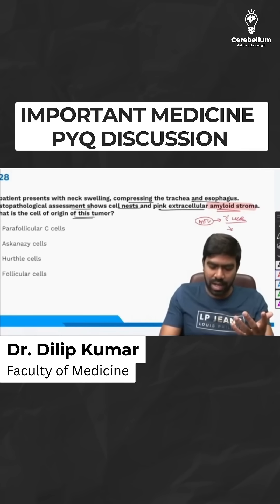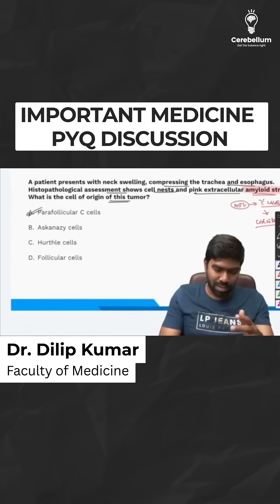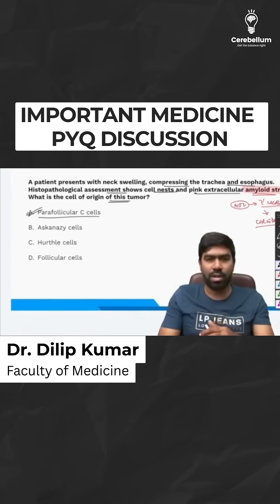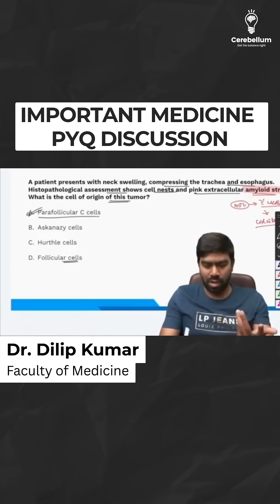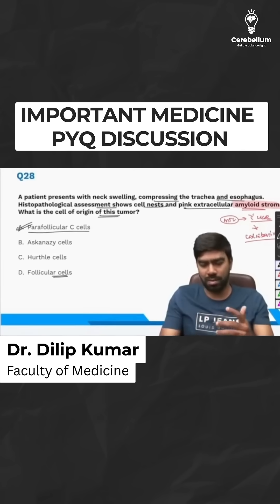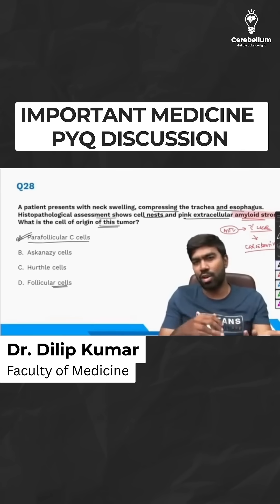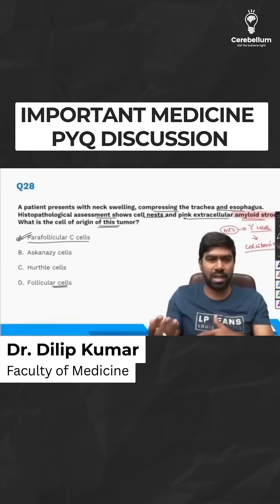C cells secrete calcitonin, and that calcitonin is the main reason for the amyloid stroma that you see. It can also cause systemic amyloid in some cases. So the right answer is parafollicular C cells. Follicular cells typically result in other tumors like PTC (papillary thyroid cancer), follicular thyroid cancer, or even anaplastic cancer.